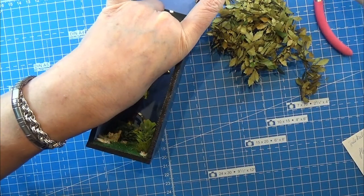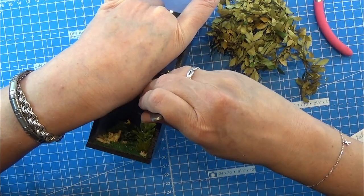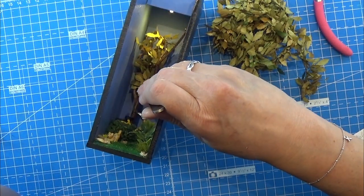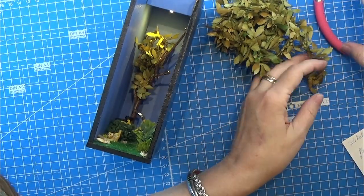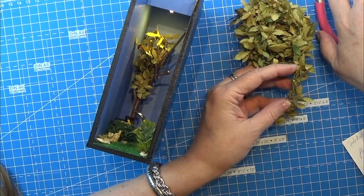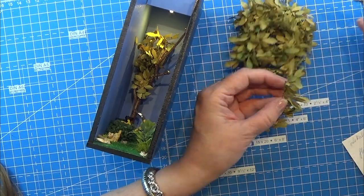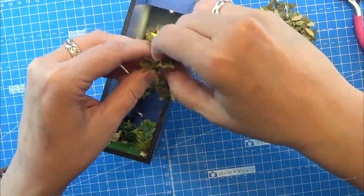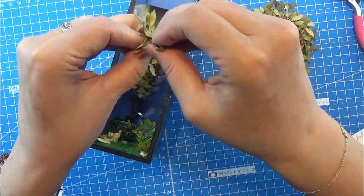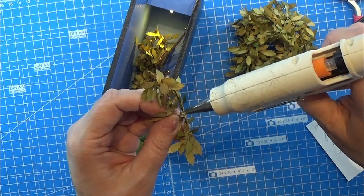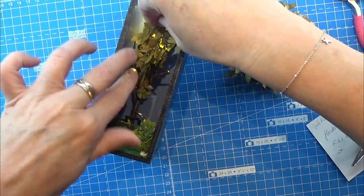I really wanted some birds or something in there in the tree as well, but everything I had was too big and I didn't feel like doing a bird that was this small. This is a really tiny scale, if it even has a scale, so I just decided to leave that out.